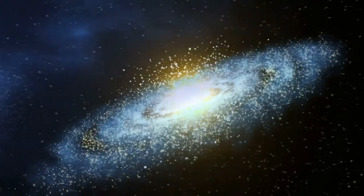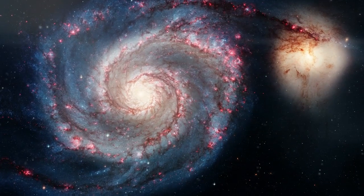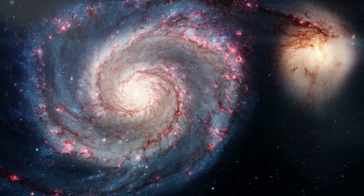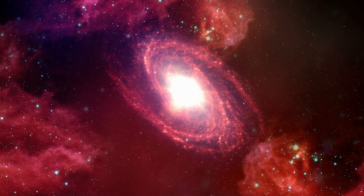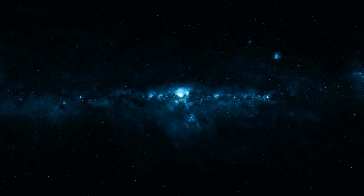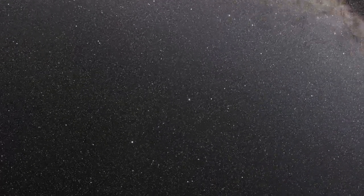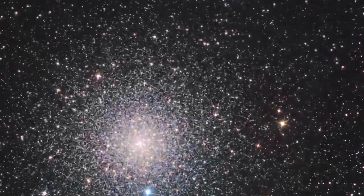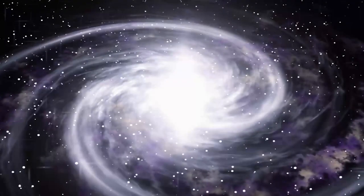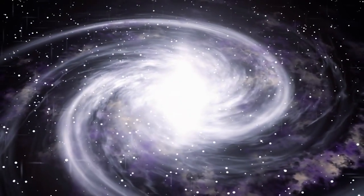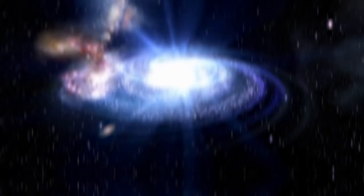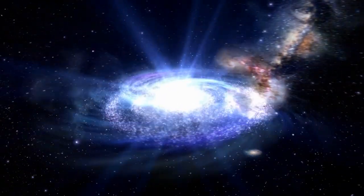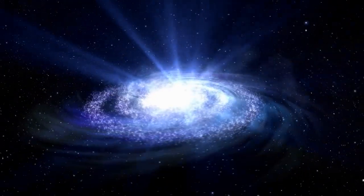While dwarf spheroidal galaxies are not uncommon, Bedin 1 has certain unique characteristics. It is not just one of the few dwarf spheroidals with a well-established distance, but also one of the most remote. It is located approximately 30 million light-years away from the Milky Way and 2 million light-years away from NGC 6744, the nearest possible host for a massive galaxy. As a result, Bedin 1 might be the most remote, tiny dwarf galaxy ever to be found.